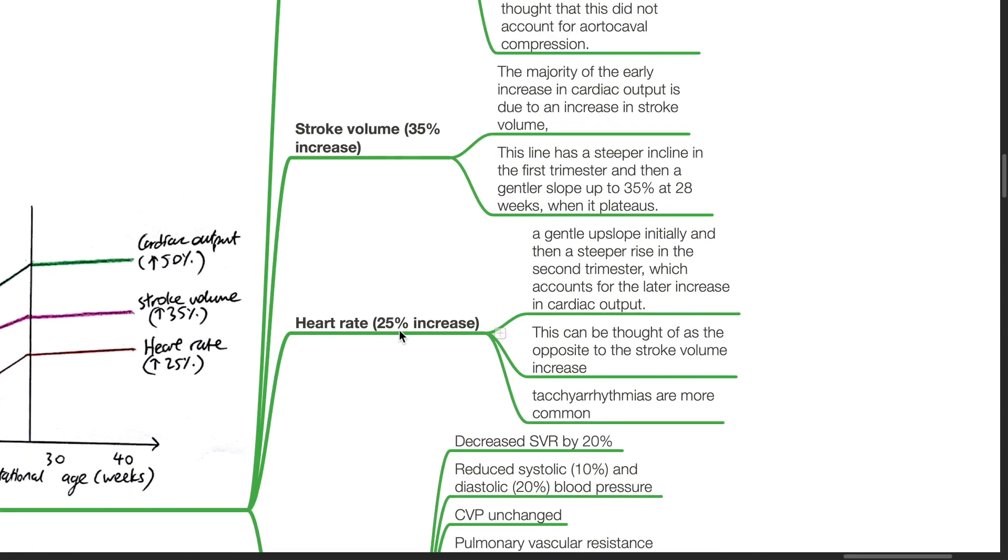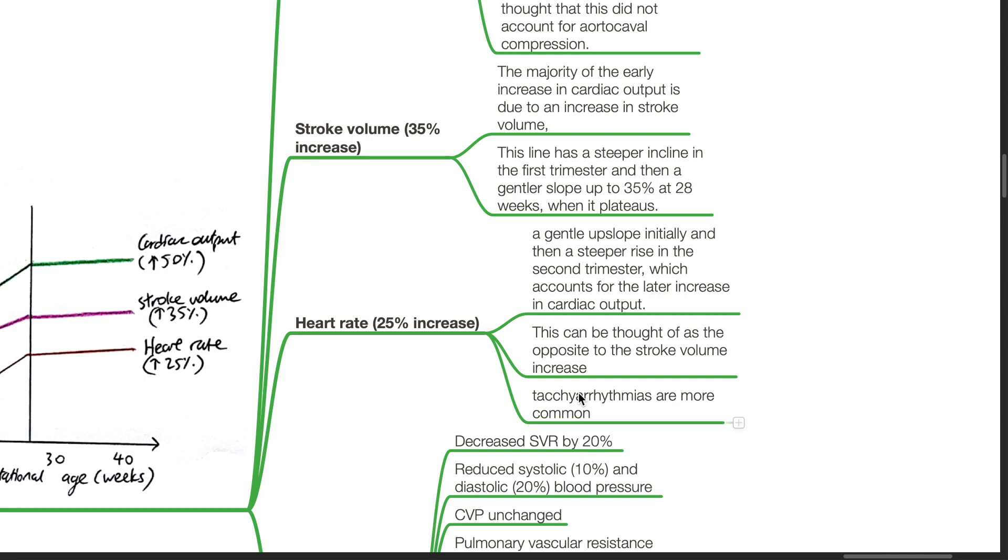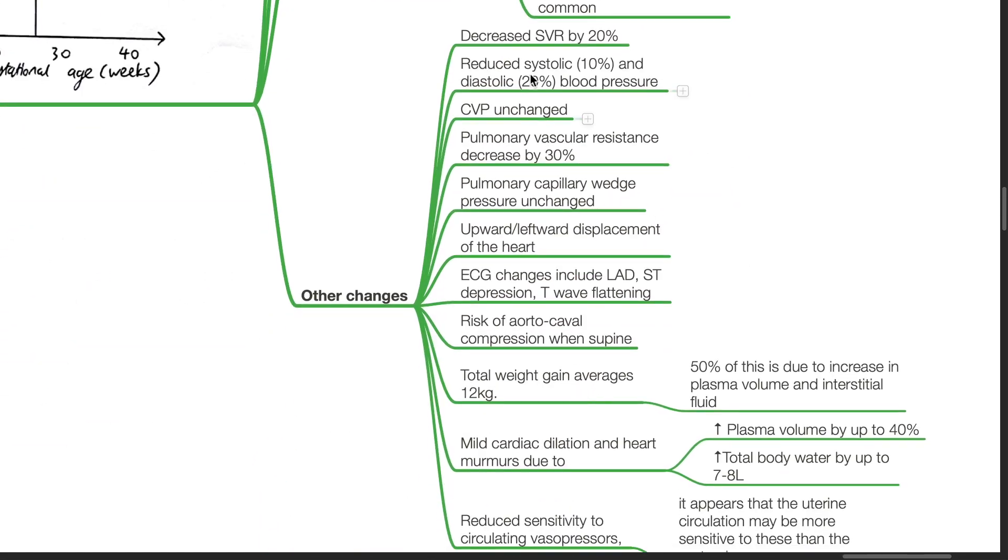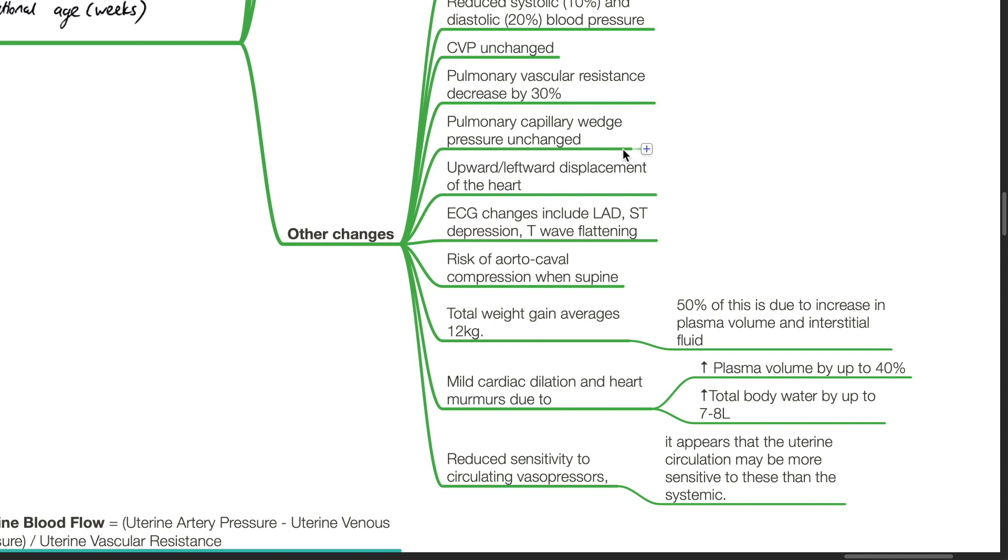Heart rate increases by 25%, a gentler upslope initially and then a steeper rise in the second trimester, which accounts for the later increase in cardiac output. This can be thought of as the opposite to the stroke volume increase. Ectopic arrhythmias are more common. Other changes include decreased SVR by 20%, systolic blood pressure decreased by 10%, diastolic blood pressure decreased by 20%, CVP unchanged, pulmonary vascular resistance decreased by 30%, PCWP unchanged.